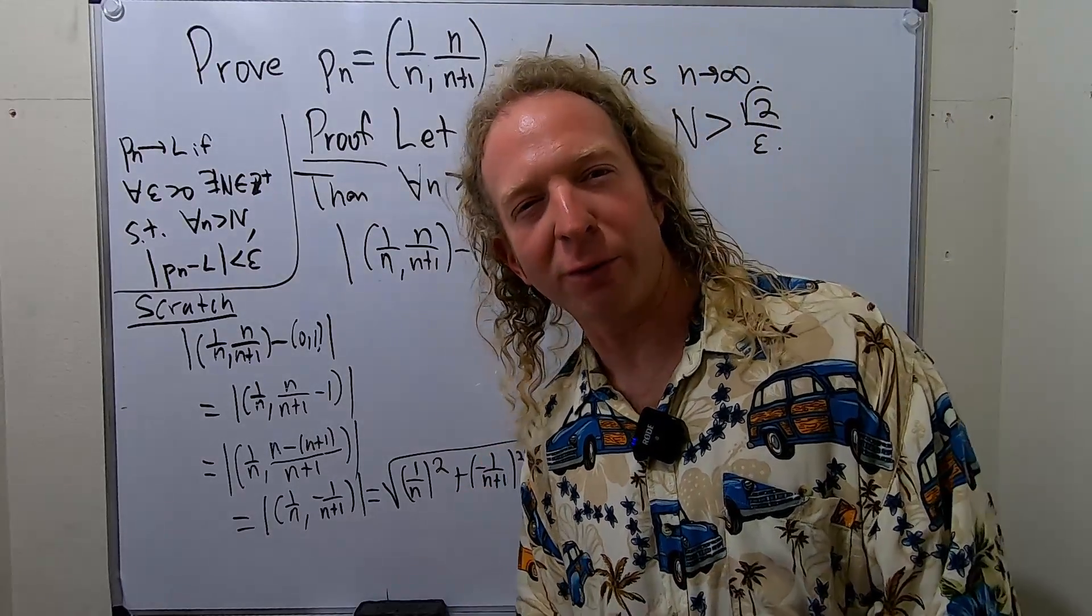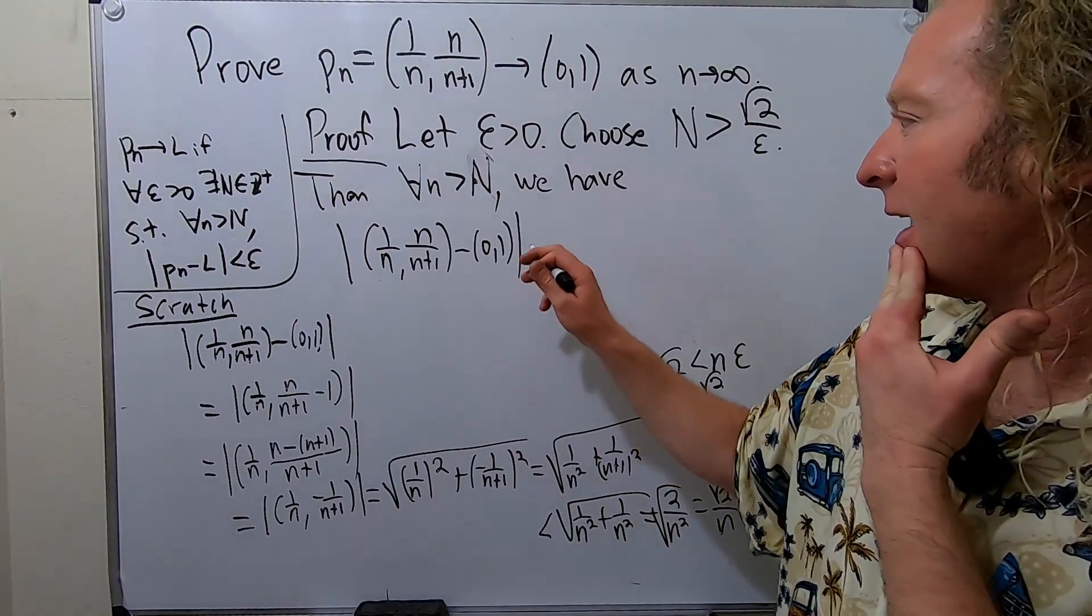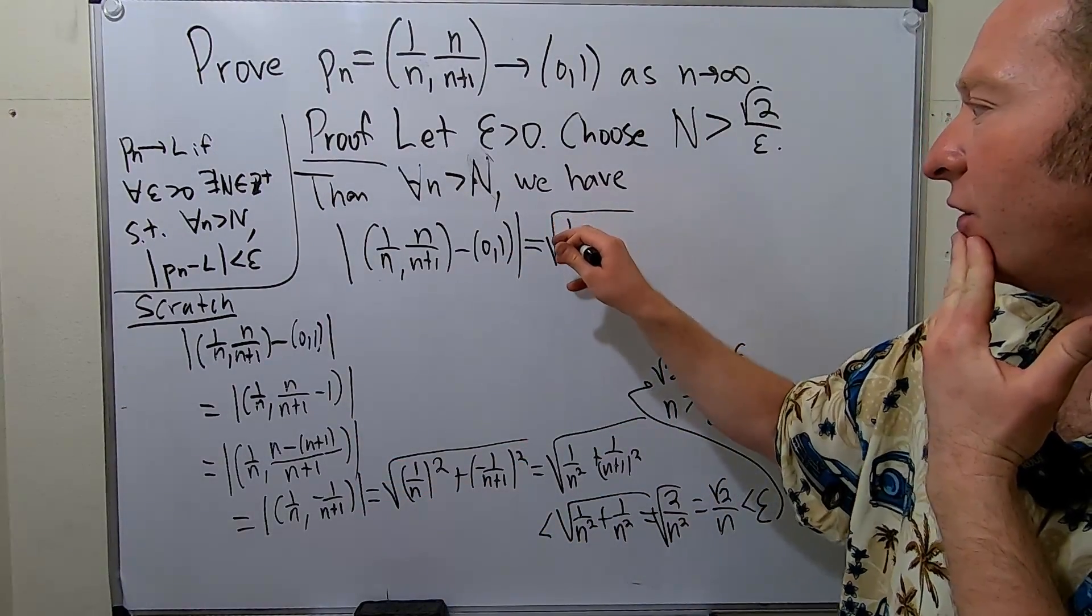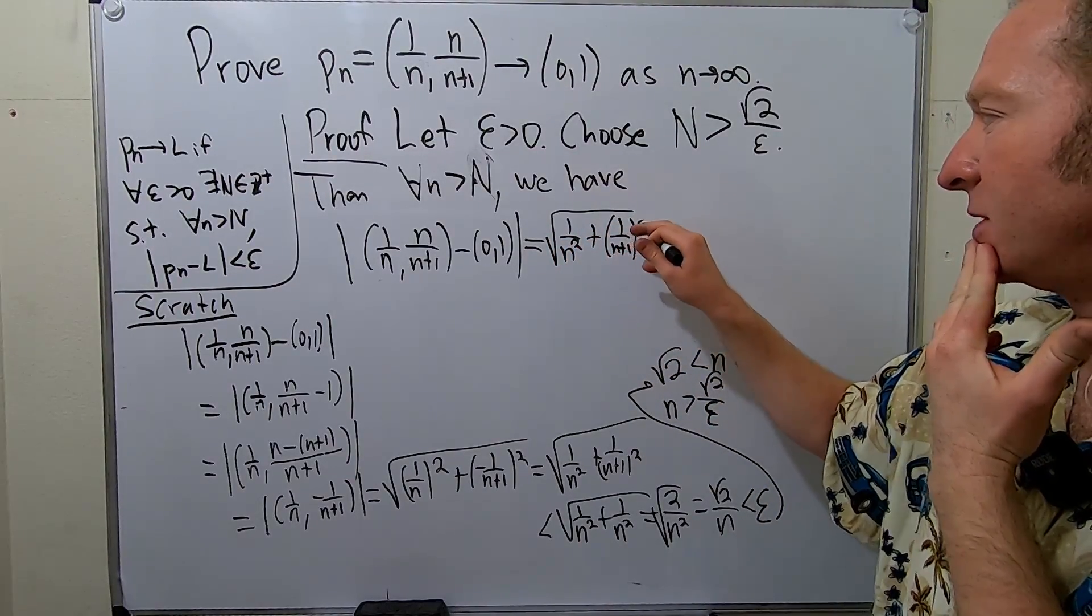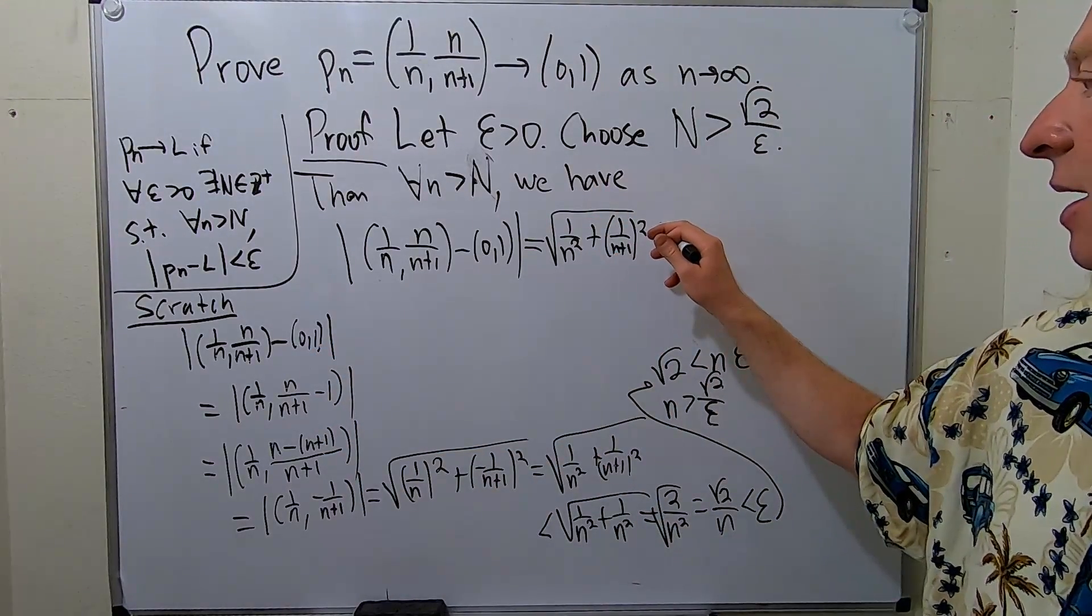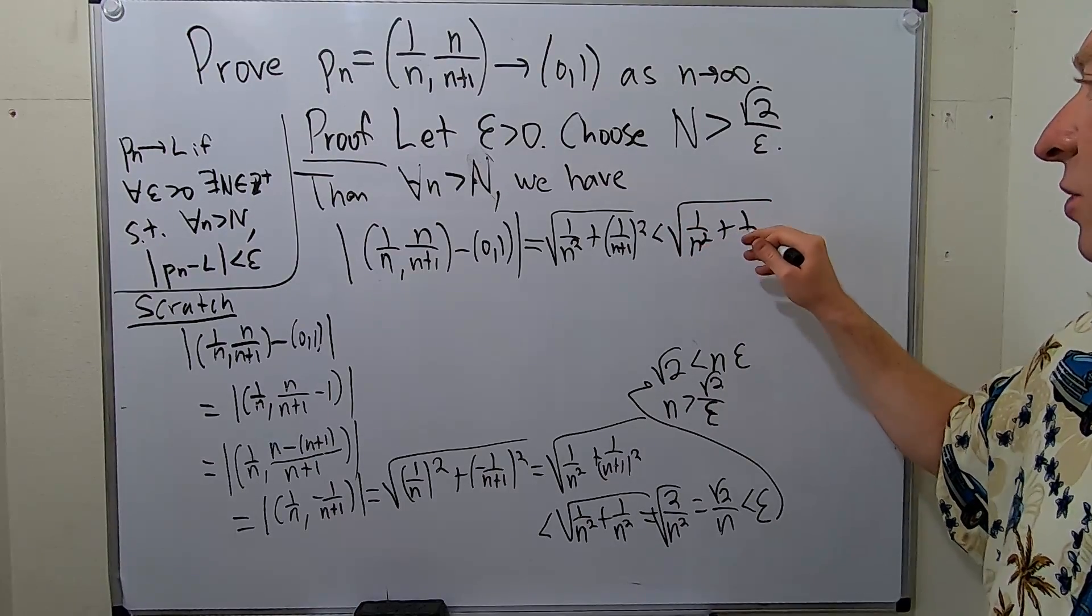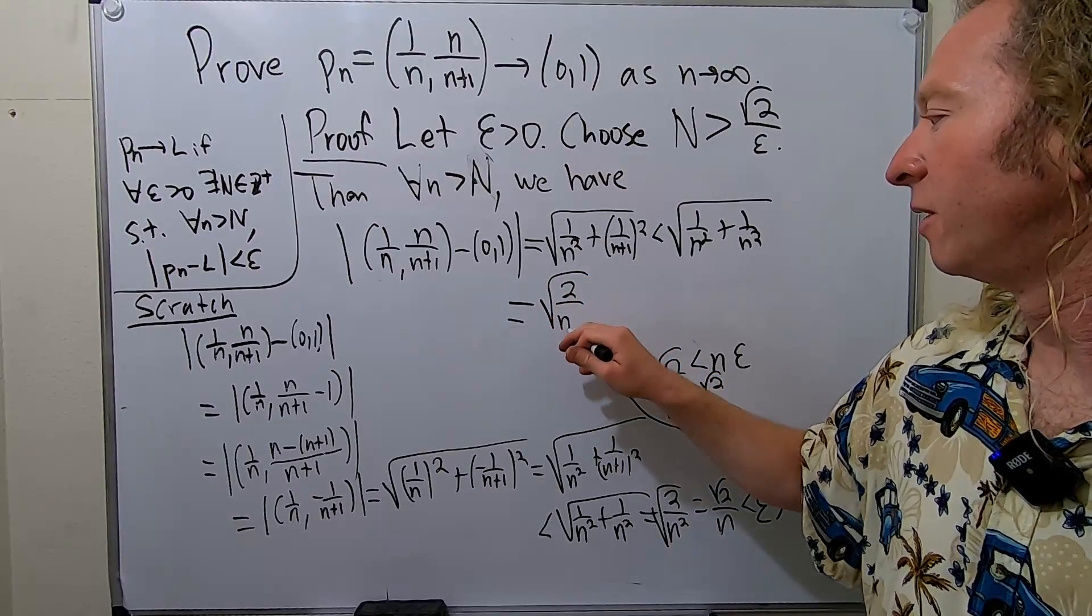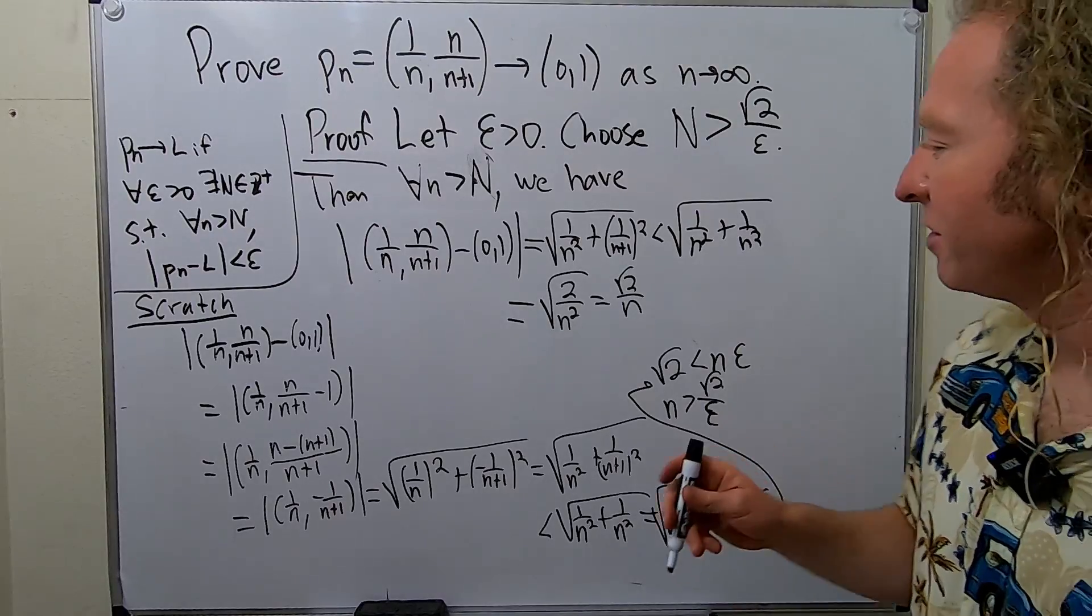You basically repeat the steps. It's just now you're writing the proof. So you're being more formal in the whole process. But it's the same thing. So I'll skip some steps here. We know this is equal to square root of 1 over n squared plus 1 over n+1 squared. We're just skipping some steps. And we know that this is less than square root 1 over n squared plus 1 over n squared. And that's equal to square root of 2 over n squared, which is equal to the square root of 2 over n.